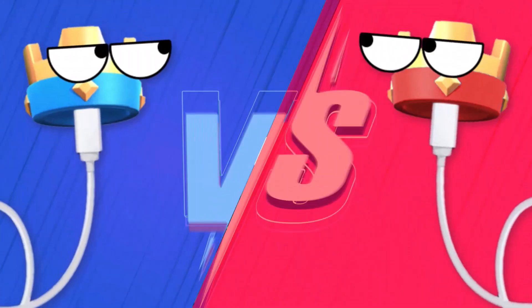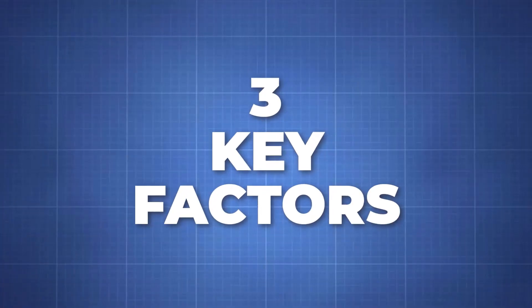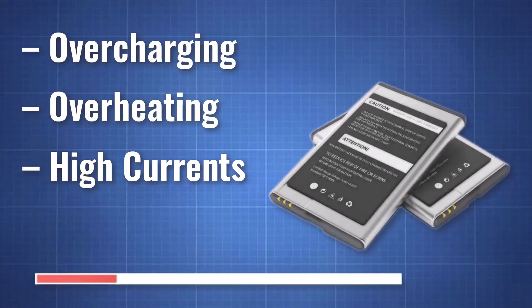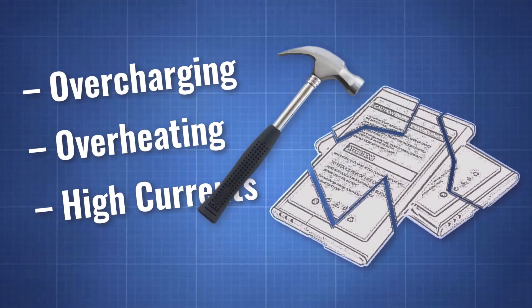There are these three key factors that are causing all this clash royale. These three key factors, overcharging, overheating, and high current, can apparently accelerate the aging of a phone battery, damaging it in the long run.